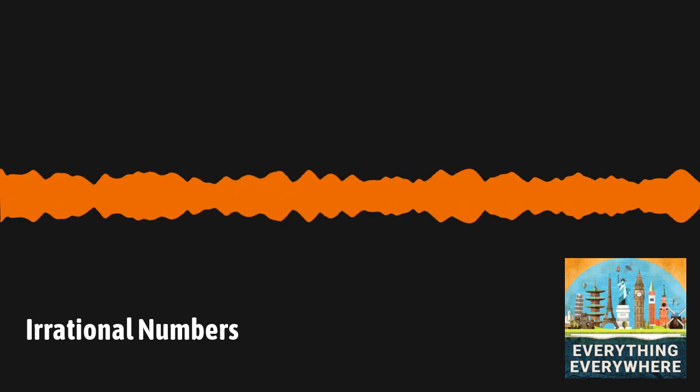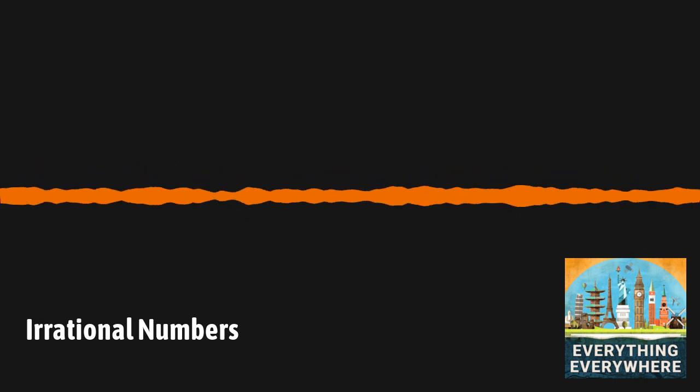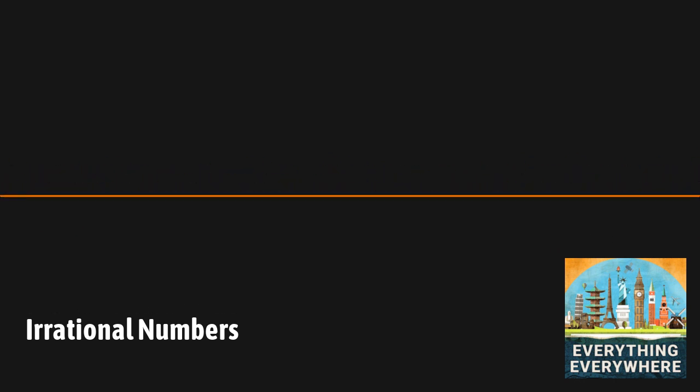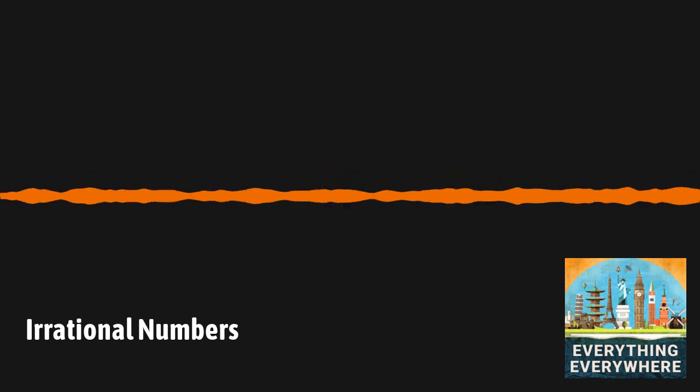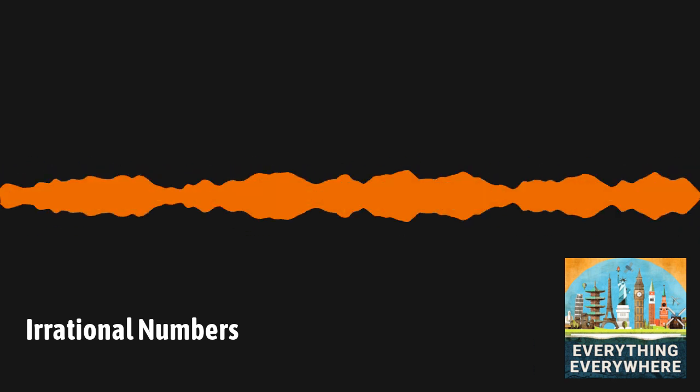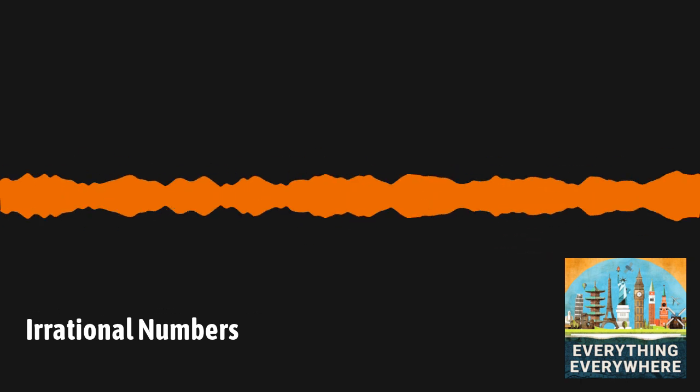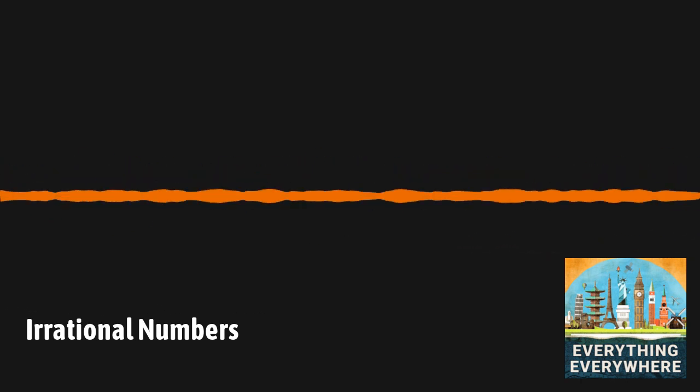If you remember back to my episode on infinity, Georg Cantor proved that there were more irrational numbers than there were rational numbers, and given that the number of rational numbers was infinite, it meant that there were some infinities larger than other infinities. And if you are incredulous and find that statement to be impossible, I recommend going back and listening to that episode.